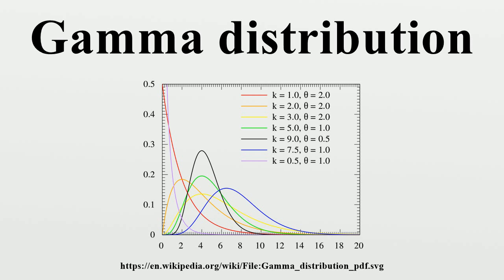The distributions for which gamma is a conjugate prior include: Poisson, exponential, normal, Pareto, gamma with known shape σ, inverse gamma with known shape parameter, and Gompertz with known scale parameter. The gamma distribution's conjugate prior is expressed with a normalizing constant Z which has no closed form solution. The posterior distribution can be found by updating the parameters, where N is the number of observations and x_i is the i-th observation.